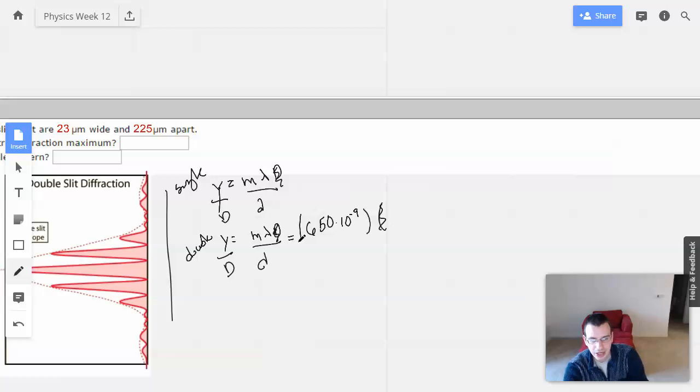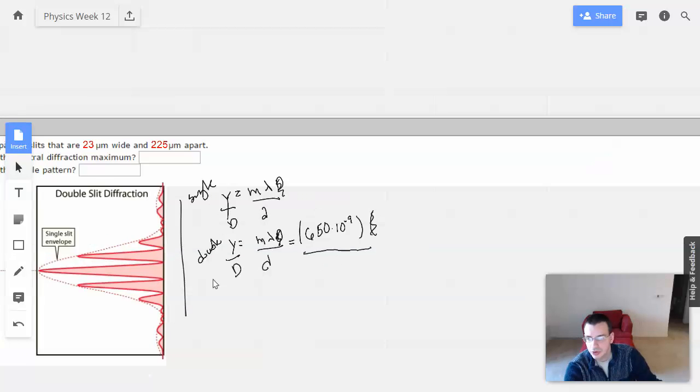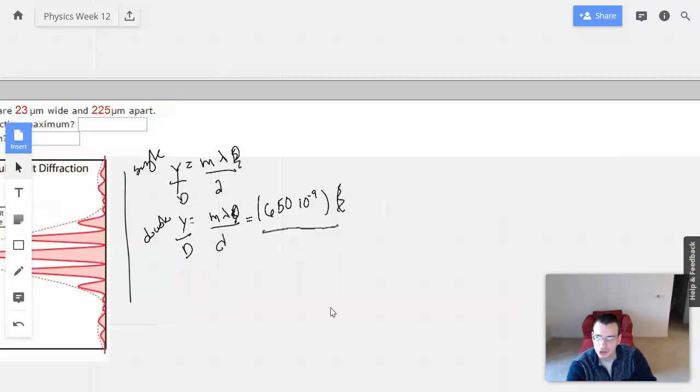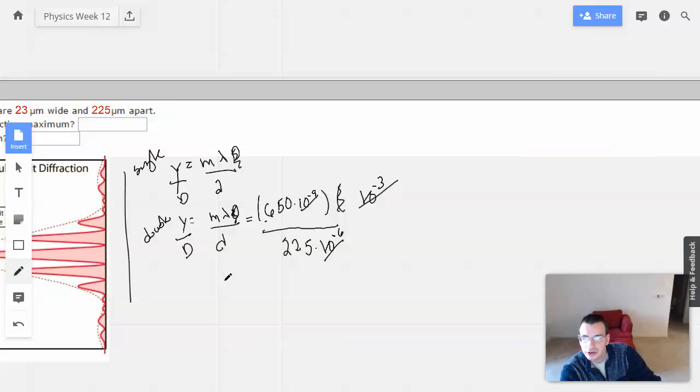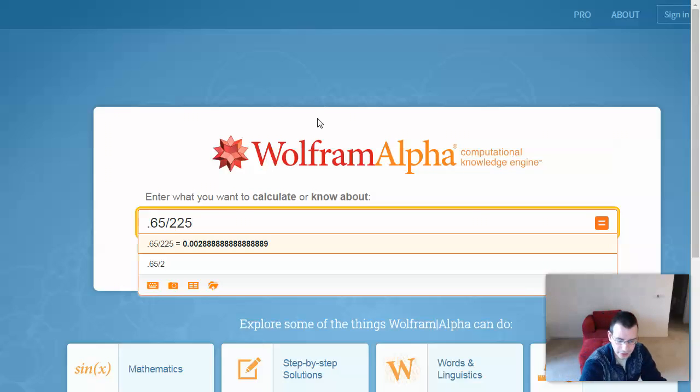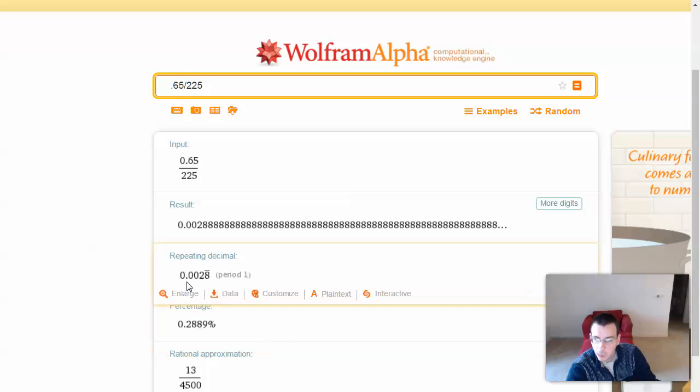So now we're just looking for the ratio. And then for the distance between the two, we're going to have 225 micrometers, 225 times 10 to the negative 6th. Cancel, cancel, 10 to the negative 3rd on the top. So we're going to do 0.65 divided by 225. And that gives us 2.8 times 10 to the negative 3rd.